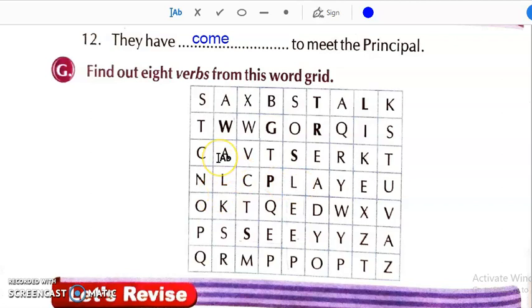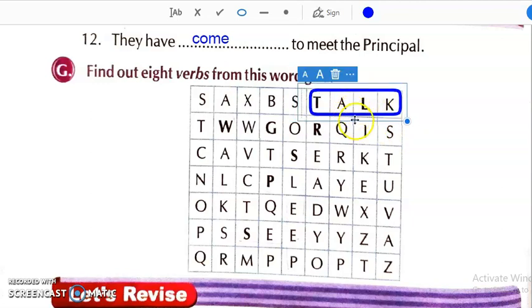You have to find out the 8 verbs from the words grid. Yeh jo word grid hai, usmein aapko jo bhi doing words hai ya verb hai, wo aapko dhoon ke usmein square banana hai. Ek word main aapko dikhati hoon. Afterwards you will do it by yourself. Just like this. Talk. T-A-L-K. Here it is written. This is the word. Talk.